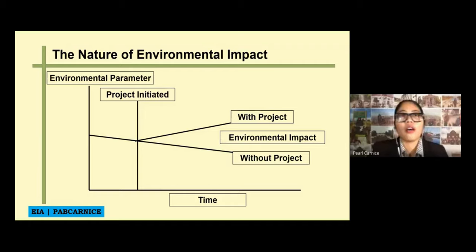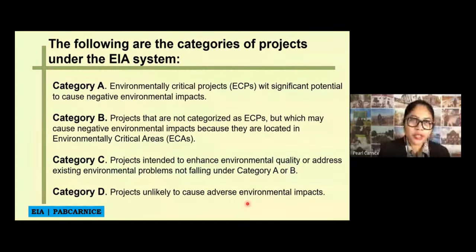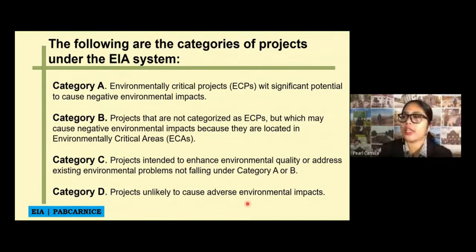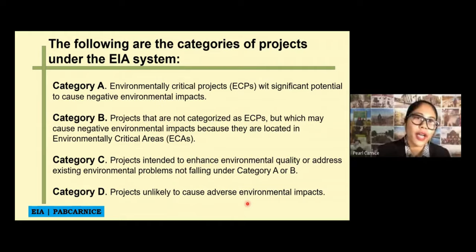Let's go now to categories of projects under the EIA system. This is according to DAO 03-30, which I will be sharing with you — you can also download it online. We have four categories: Category A, B, C, and D.